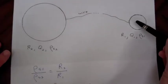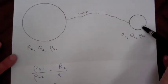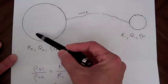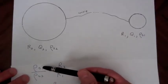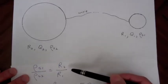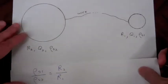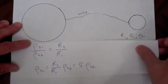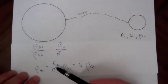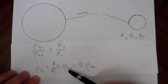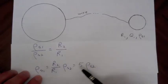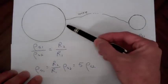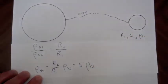Let's assume the radius of sphere 1 is 1 meter and the radius of sphere 2 is 5 meters. Using the equation we just derived, the charge density on sphere 1 equals R₂/R₁ times the charge density on sphere 2. So for this example, the charge density on our smaller 1-meter sphere is going to be 5 times the charge density on our 5-meter sphere.